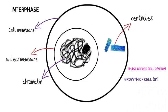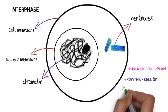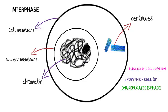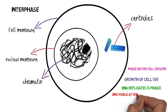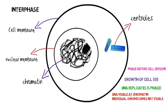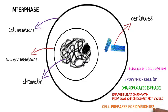Interphase occurs in three areas. First is the growth of the cell from the previous cell division, known as G1. Then in the S phase, the DNA replicates itself, so replication occurs before cell division happens. The DNA is visible as chromatin and individual chromosomes are not visible. The final bit just before cell division is the G2 phase, where the cell is preparing and getting ready for cell division.